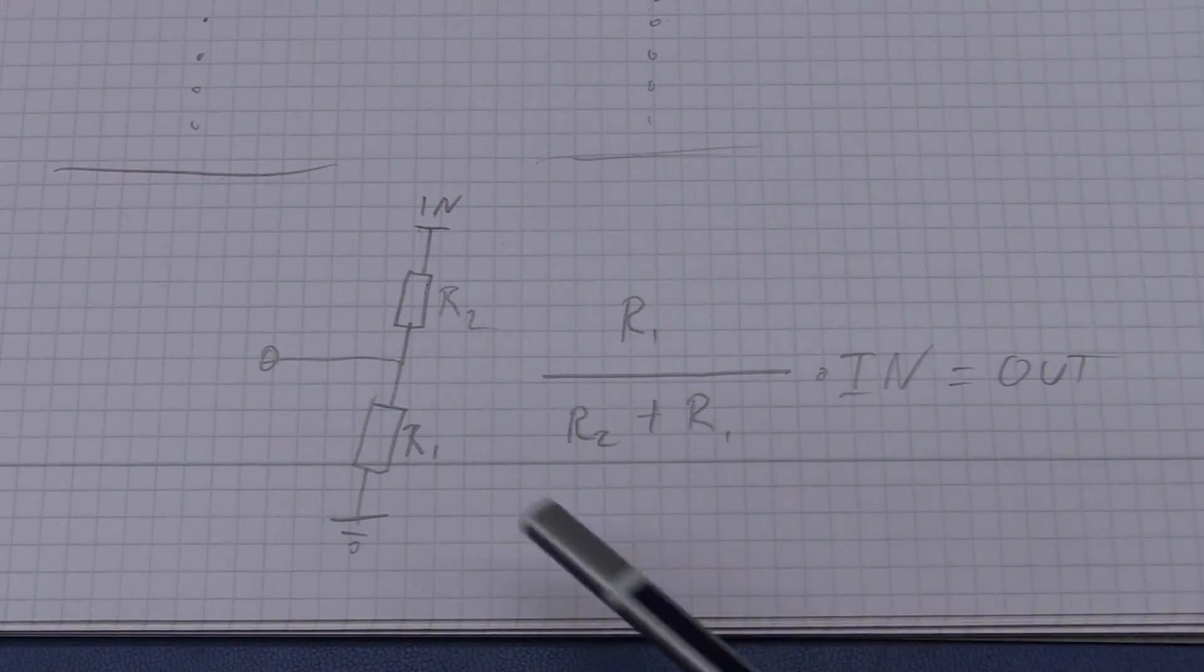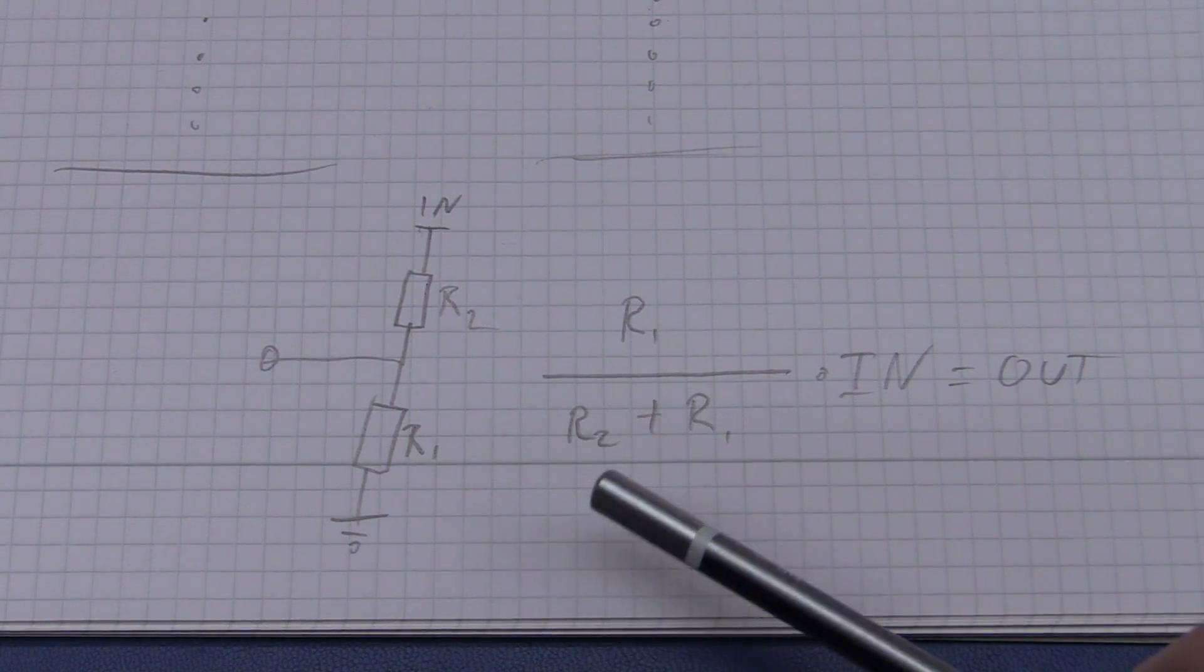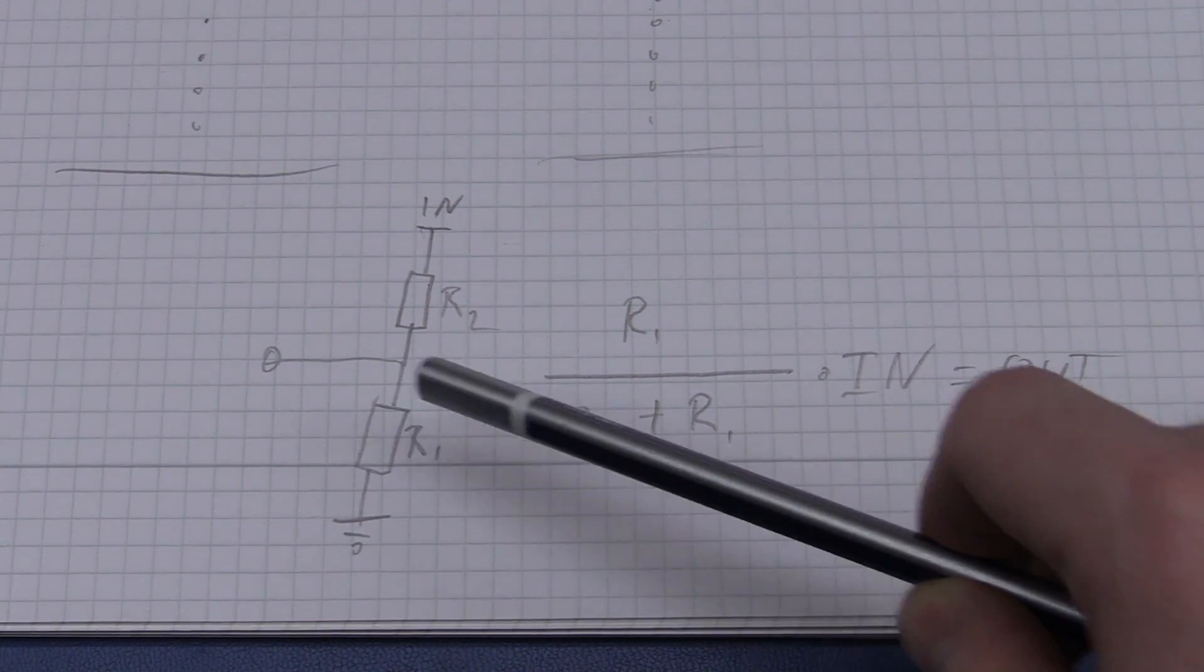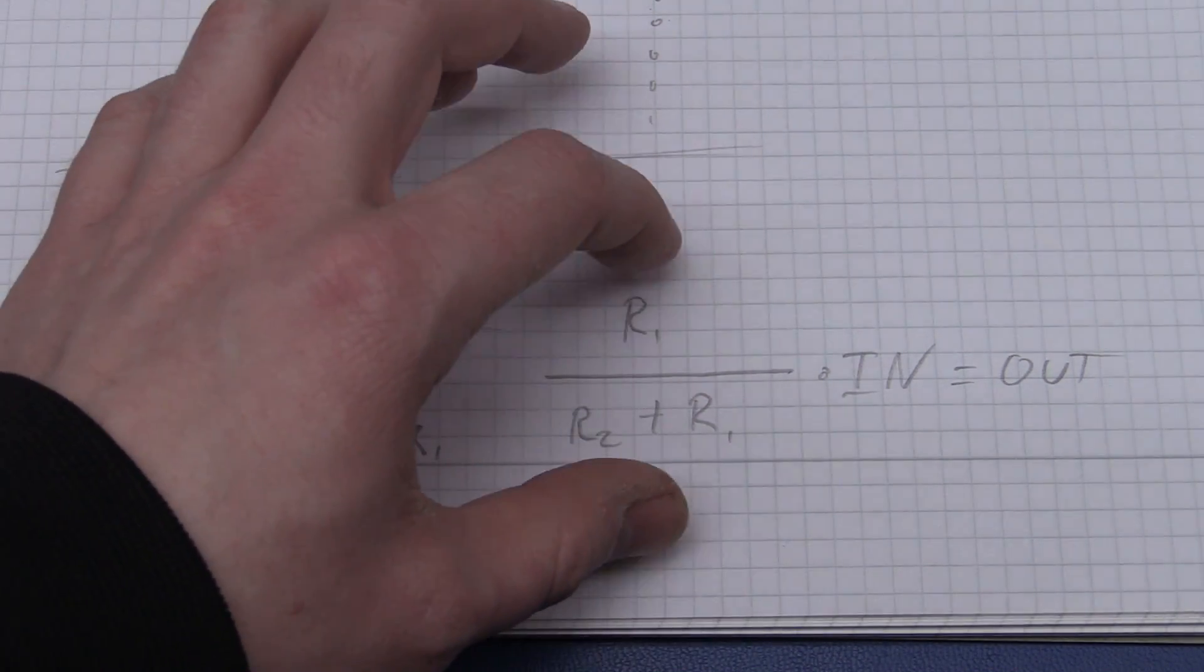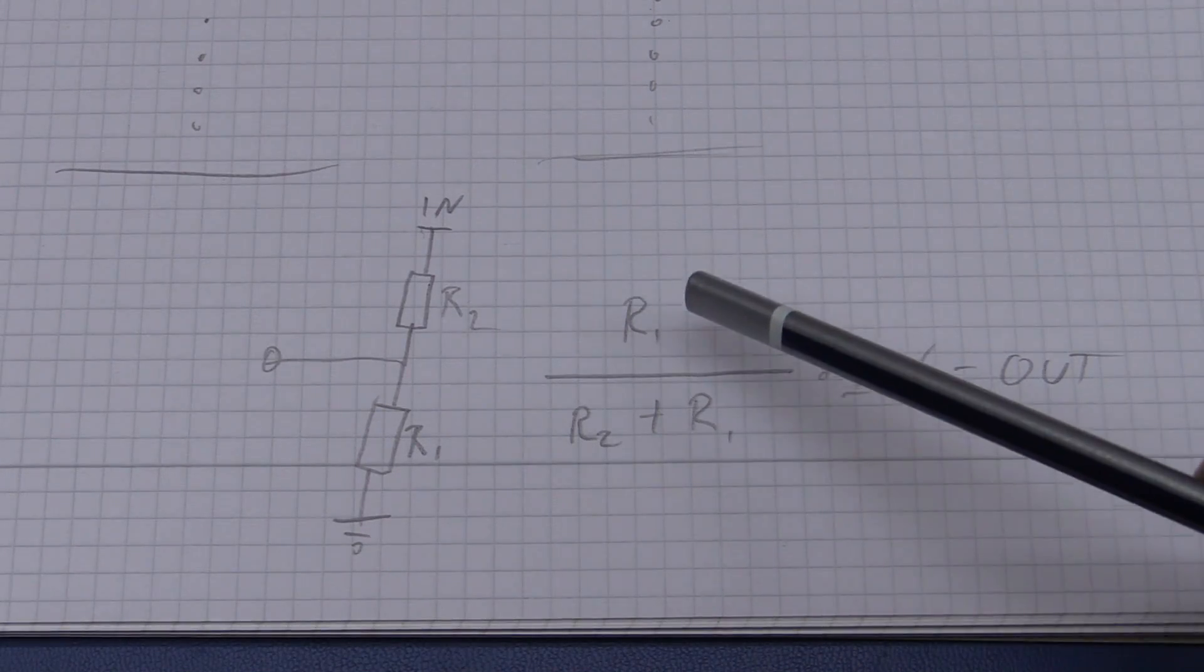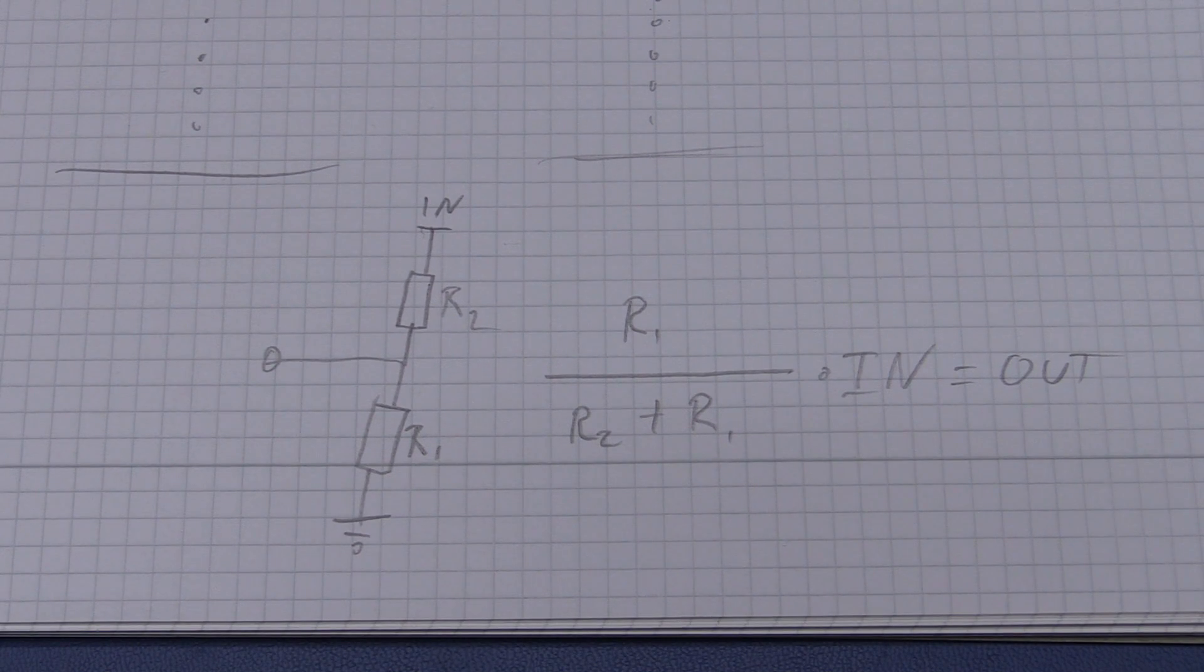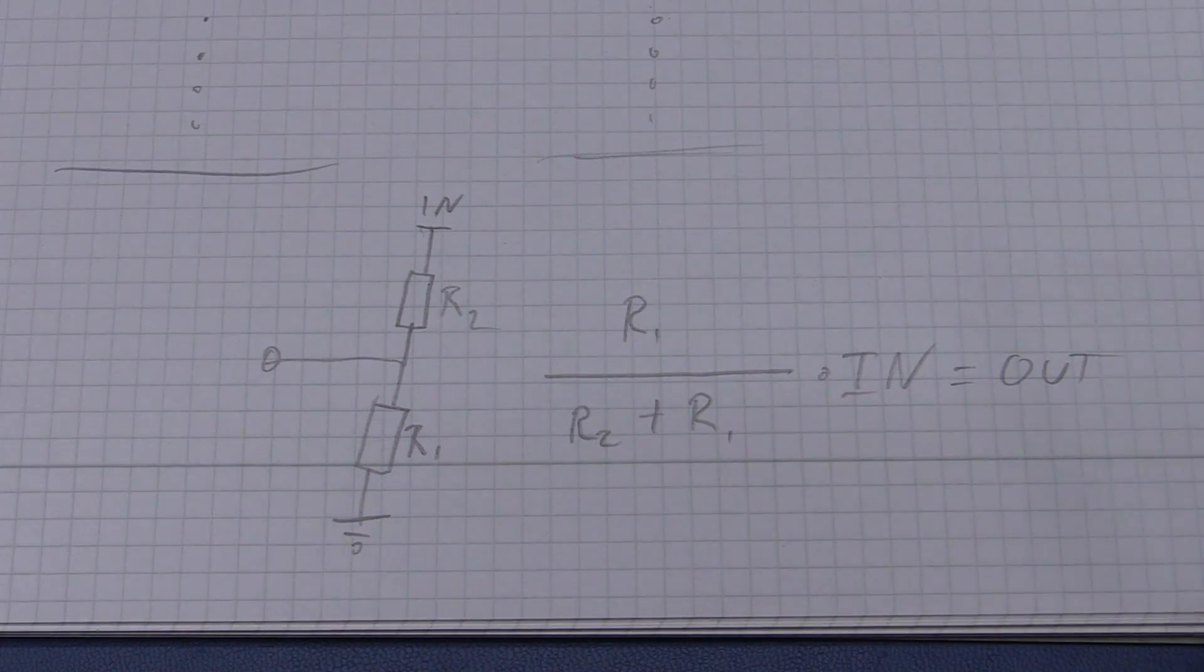The thing about this is that it also works with impedances. If you put a capacitor here instead, and you take the frequency into account, then you can use the same formula. You just need to put the impedance for the capacitor instead of R1.